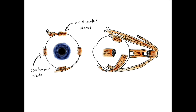Most of these muscles are innervated by the oculomotor nerve — that includes the superior rectus, the medial rectus, the inferior oblique, and the inferior rectus. The oculomotor nerve comes from the midbrain, travels through the cavernous sinus, and through the superior orbital fissure to get to those muscles.